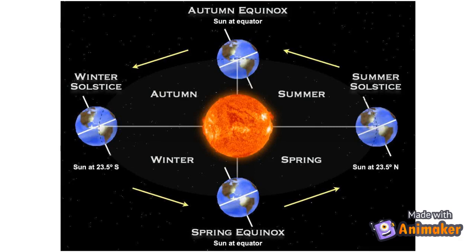When the sun is towards the farthest north, it is known as the summer solstice. It usually takes place around the 22nd of July. When the sun is towards the farthest south, it is known as the winter solstice. It usually takes place around the 22nd of December.